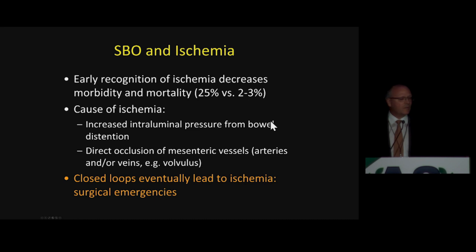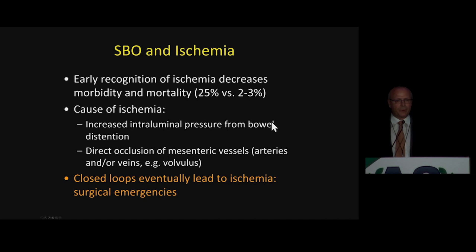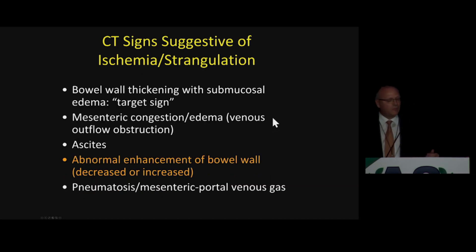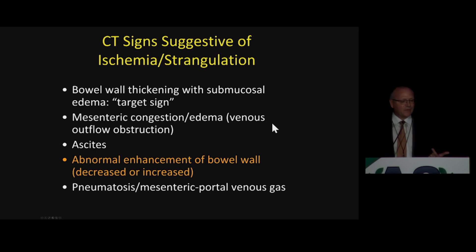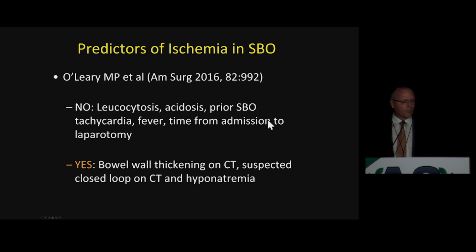Beyond closed-loop, we also need to look for signs of ischemia. Ischemia is caused by either increased intraluminal pressure from progressive bowel distension, or by direct occlusion of the arteries and veins caused by volvulus or by increased pressure within the closed-loop. If untreated, a closed-loop eventually leads to ischemia, and ischemia eventually leads to necrosis. So essentially every closed-loop needs to be treated surgically. The signs of ischemia or strangulation include bowel wall thickening with target sign, mesentery congestion and edema, ascites. The most important is abnormal enhancement of bowel wall, and if it has progressed to necrosis, you may see pneumatosis or portal venous gas.